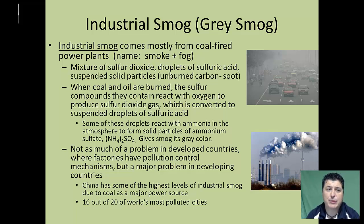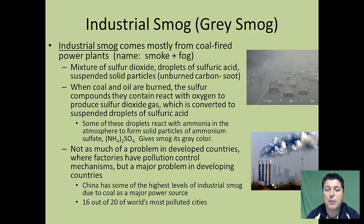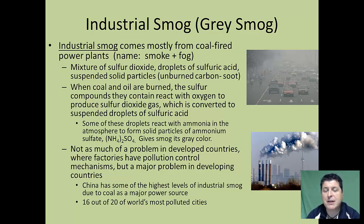One common secondary pollutant is industrial smog, or gray smog — a mixture of sulfur dioxide droplets and suspended solid particles that might come from unburned carbon or soot. When coal and oil are burned, the sulfur compounds they contain react with oxygen to produce sulfur dioxide gas. Some droplets react with ammonia in the atmosphere to form solid particles of ammonium sulfate, which gives that smog its gray color. This is not as much of a problem in developed countries because most factories and coal-burning plants have major pollution control mechanisms, but it remains a major problem in developing countries.